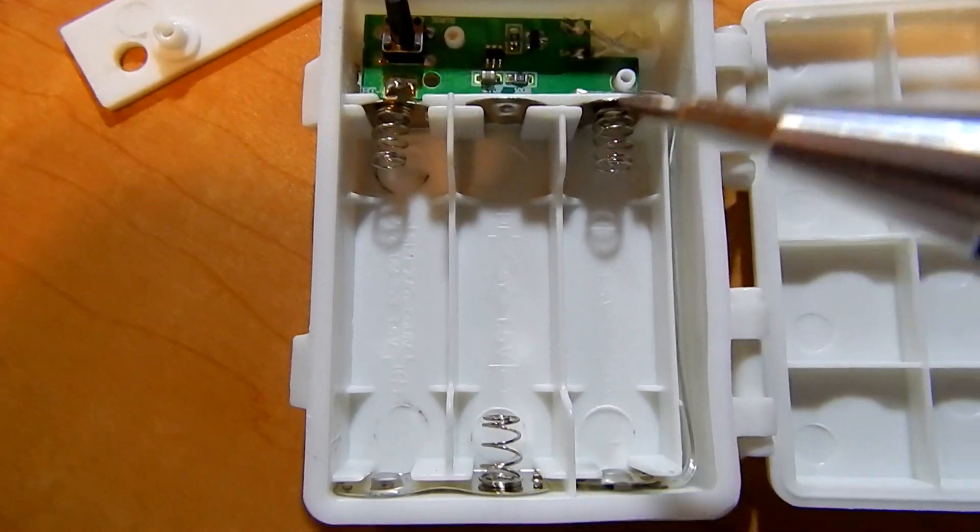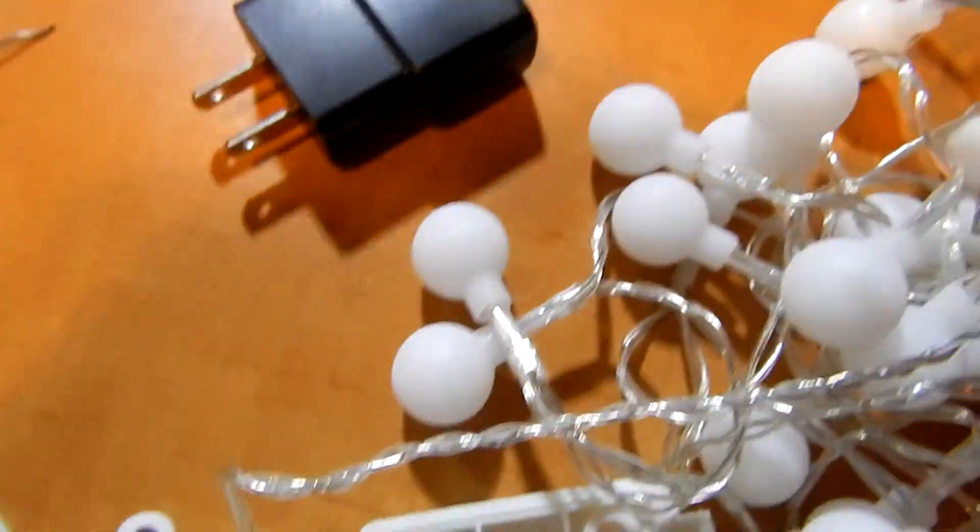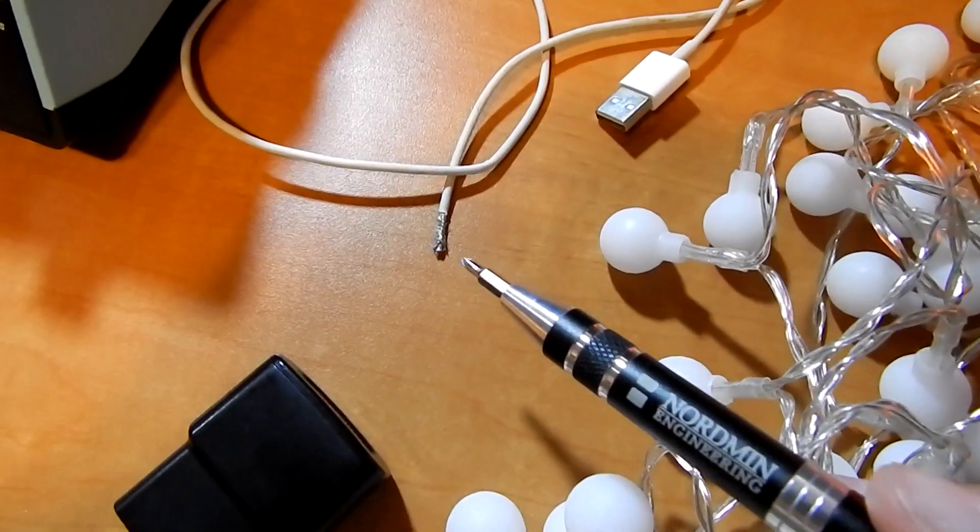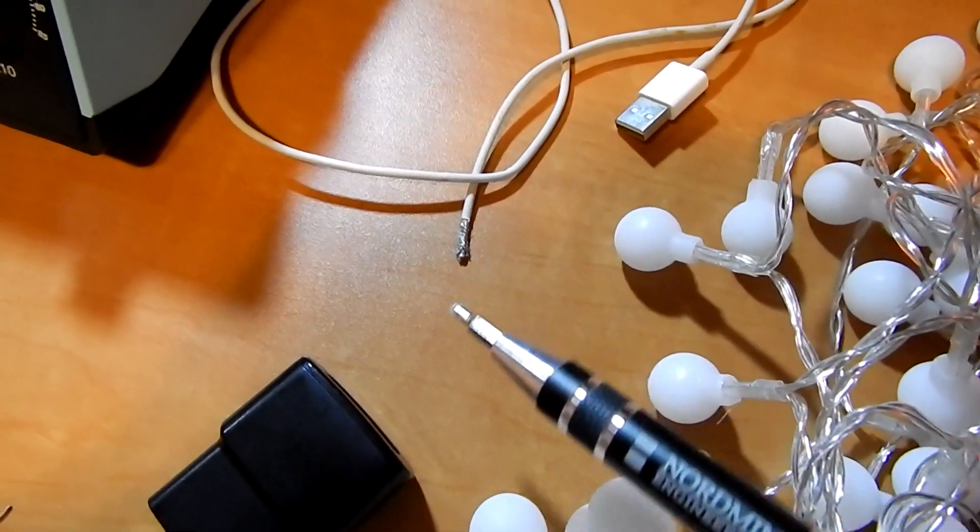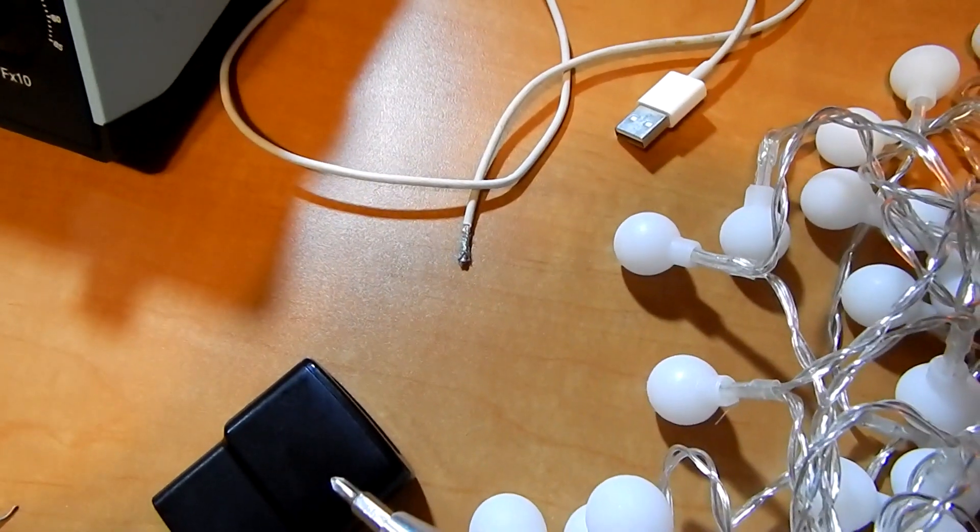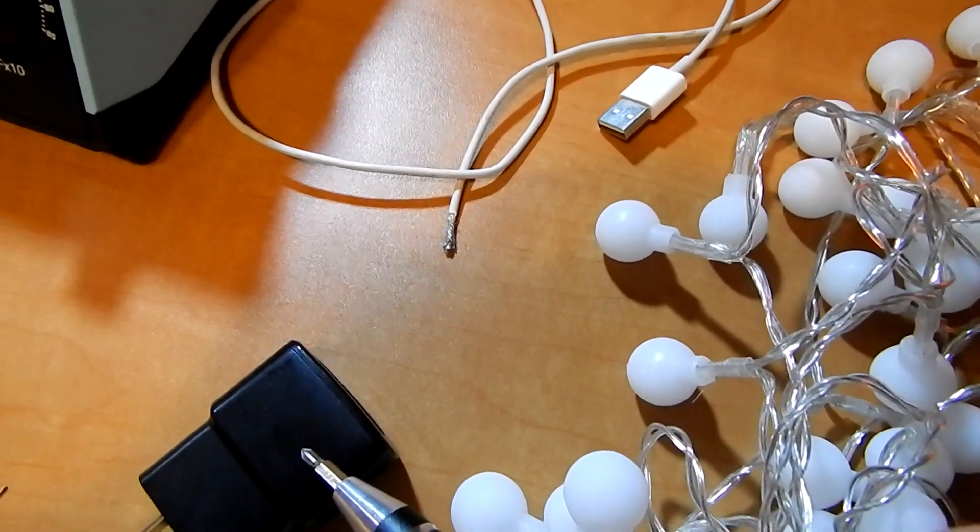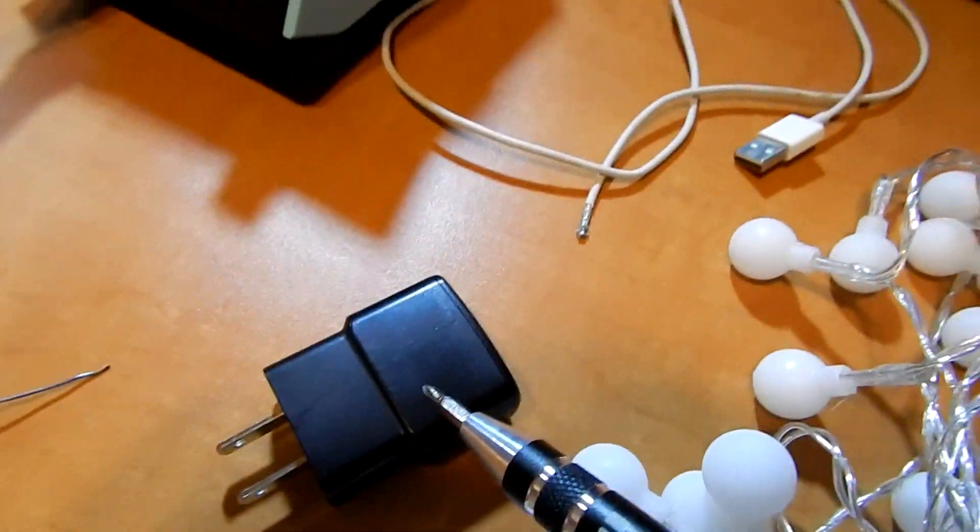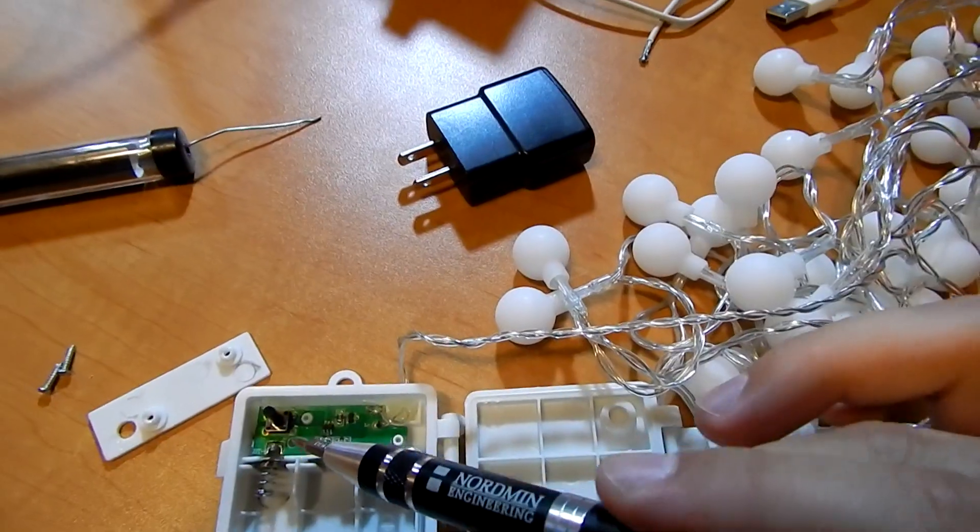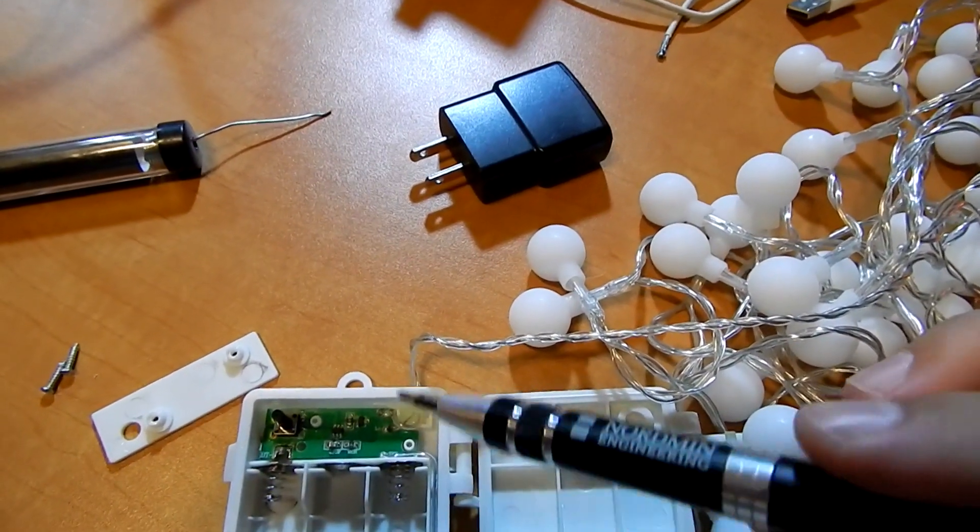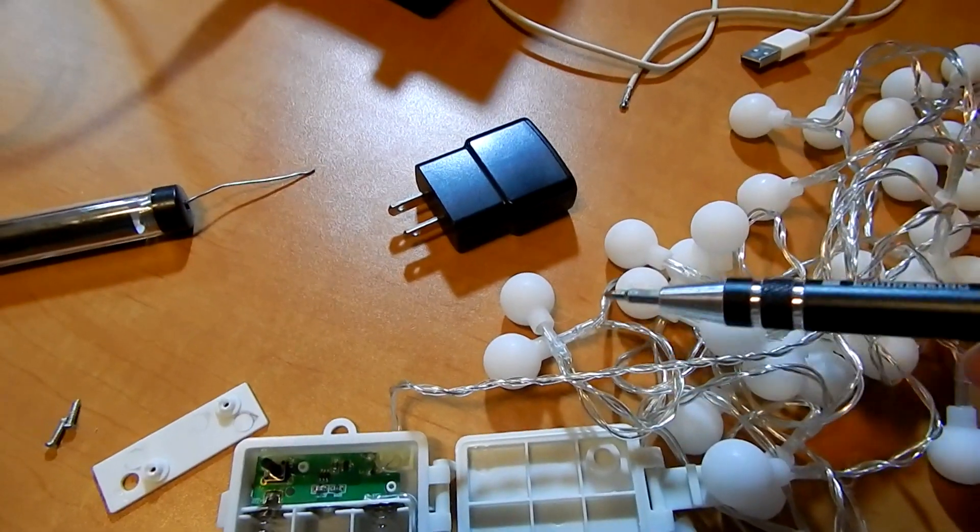Now that you know that, strip the USB cable to find the positive and negative leads. Before you solder them on, I suggest plugging it into the outlet and testing that once you put the leads onto the appropriate spots, the lights will turn on themselves, so that you don't have to unsolder everything you've done and then go again.